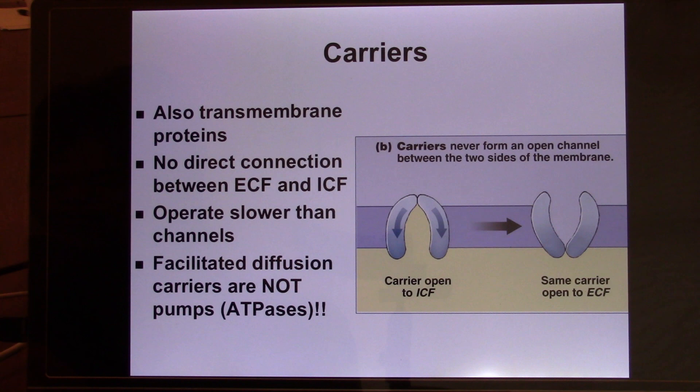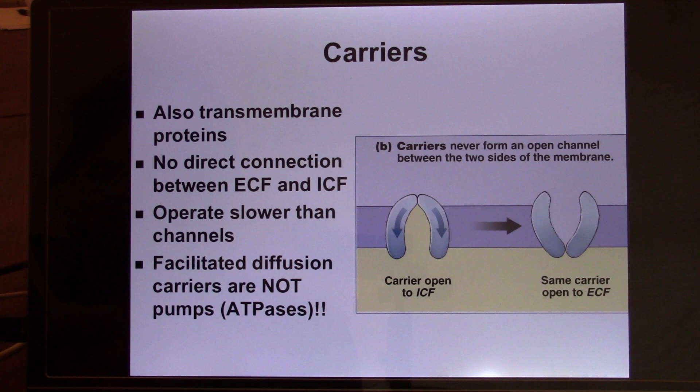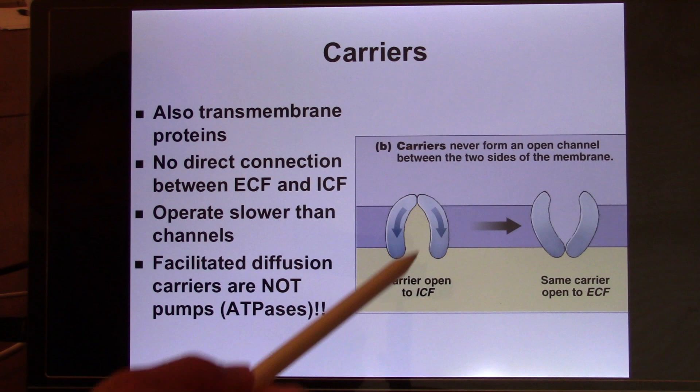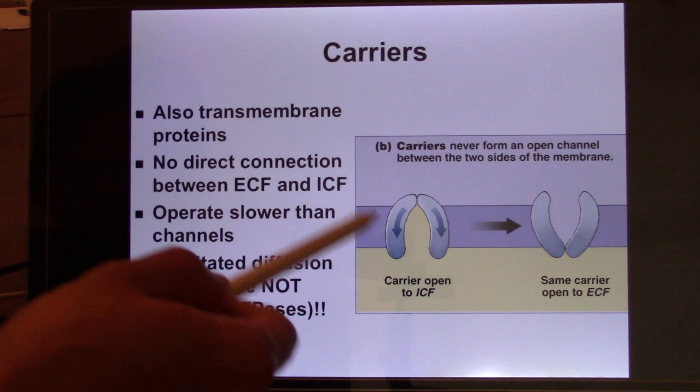Now let's look at the carrier. Carriers are usually dealing with bigger molecules. If you opened a bigger channel, it would actually damage the cell — damage the inside and outside environment. So they cannot make a channel; they use a carrier instead. The difference between a channel and a carrier is that the carrier does not provide a direct opening between the two sides. You need to cause a conformational change to move the molecule to the other side. Because of this structural change, it's much slower compared with an ion channel.